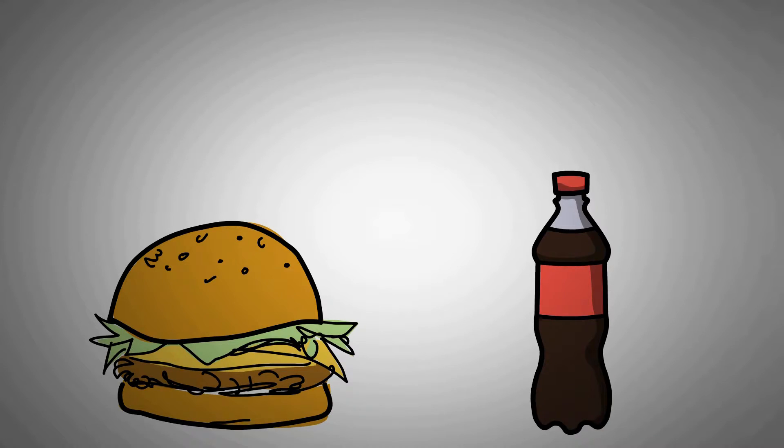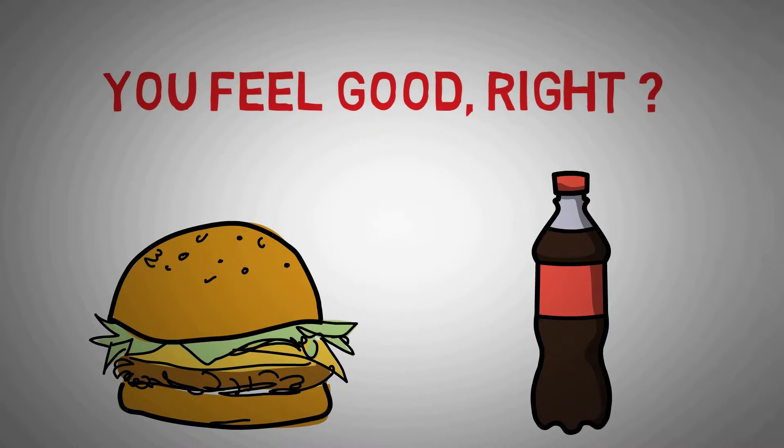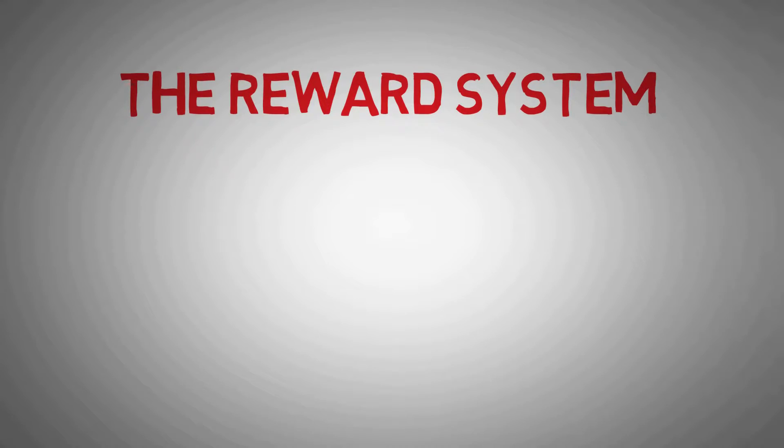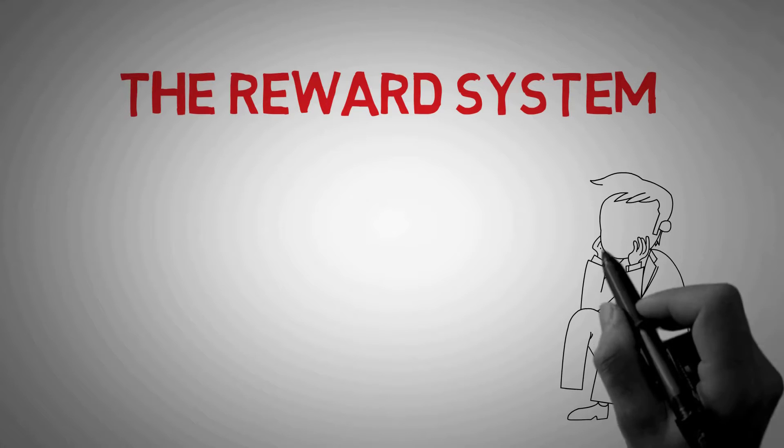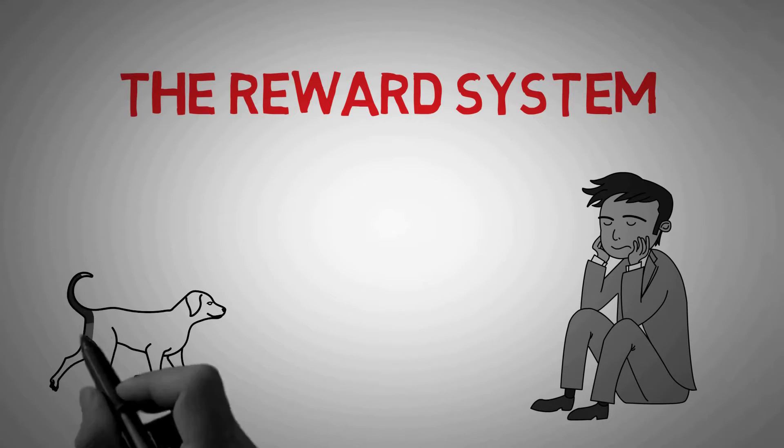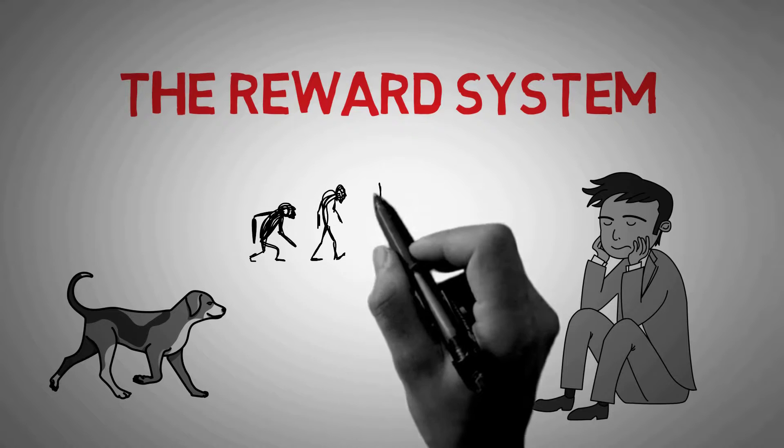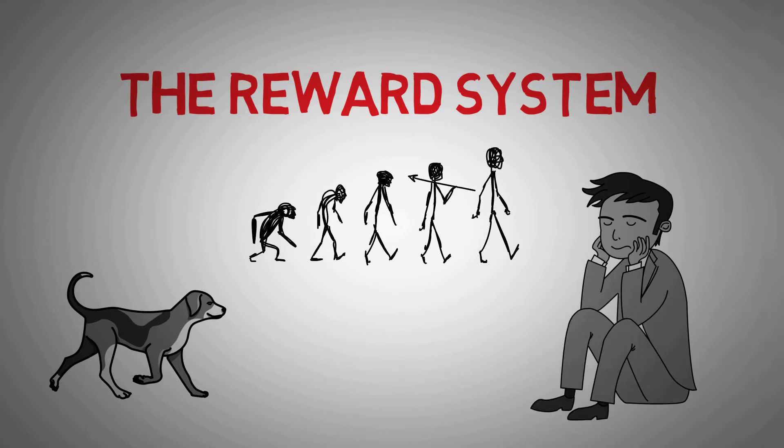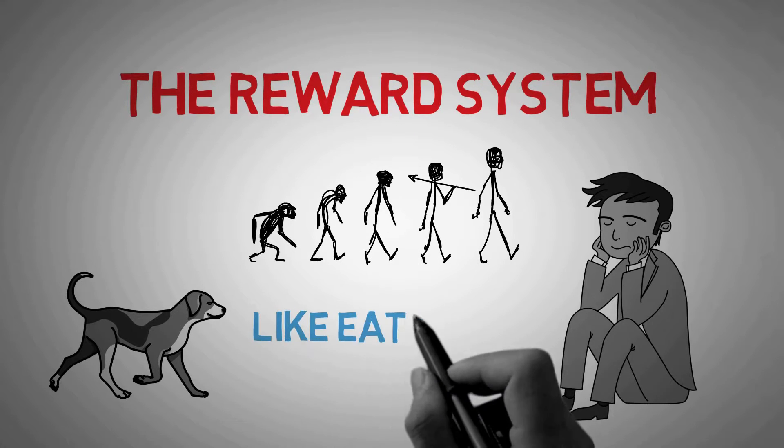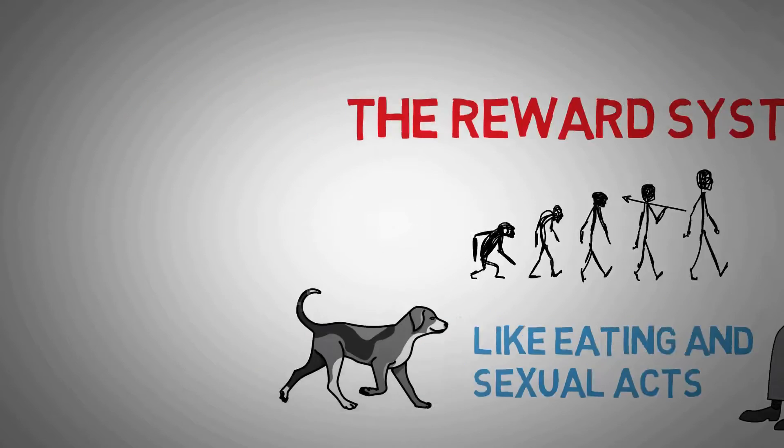So what's the reason for this? There is a system in your brain that's called the reward system. This can be found in both humans and animals. This system was designed to reward you when you're doing things that advance your survival. This includes primal behaviors like eating and sexual acts.